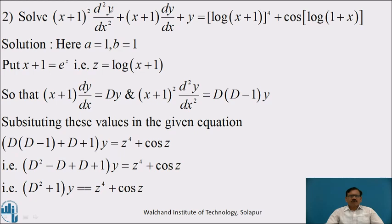Now we will see one more example. Solve (x+1)² d²y/dx² + (x+1) dy/dx + y = [log(x+1)]⁴ + cos[log(1+x)]. Comparing, a = 1 and b = 1. Put x + 1 = e^z, i.e., z = log(x+1), so that (x+1) dy/dx = D(y) and (x+1)² d²y/dx² = D(D-1)y.